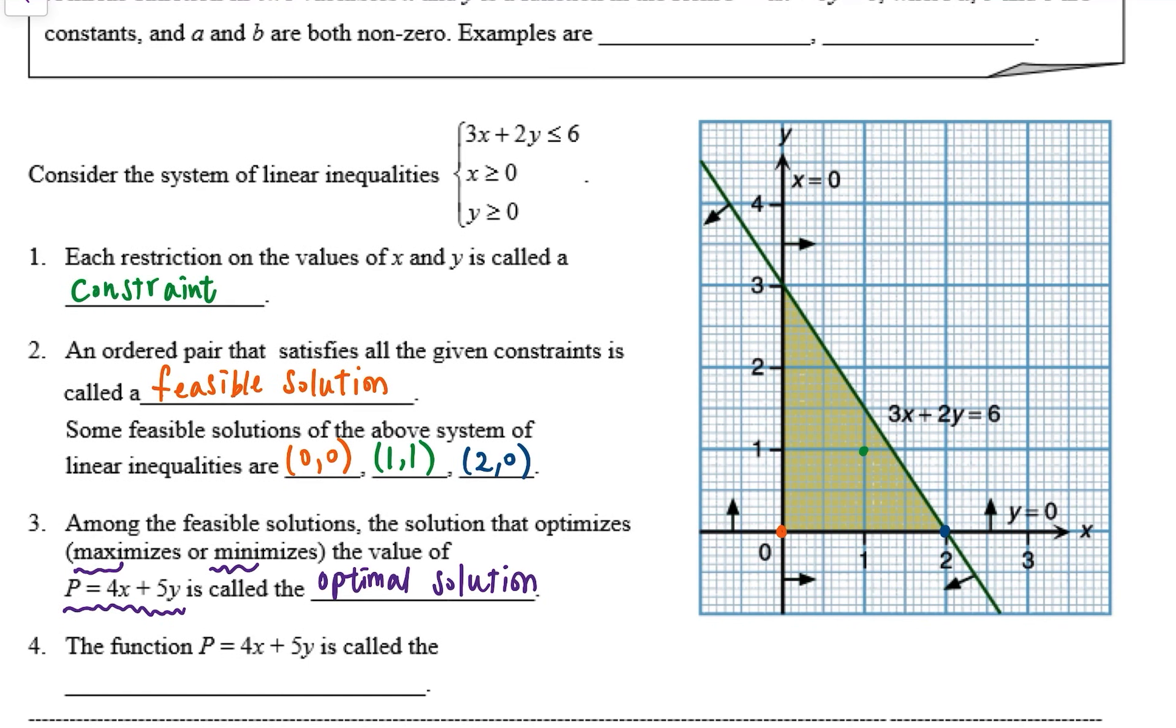And the function P = 4x + 5y is called the objective function. So what we do in linear programming is we would like to find the optimal solutions given the objective function.